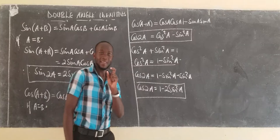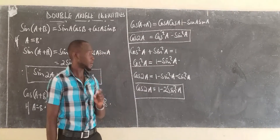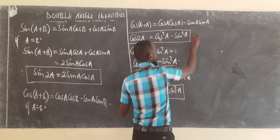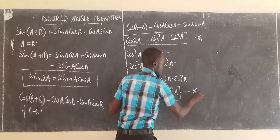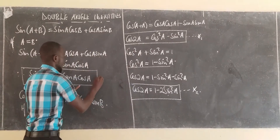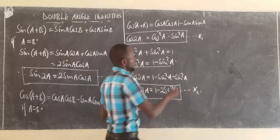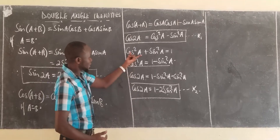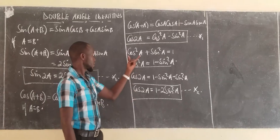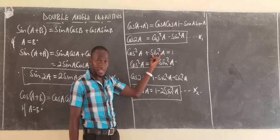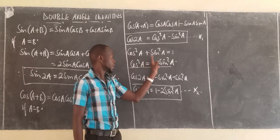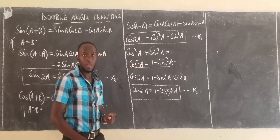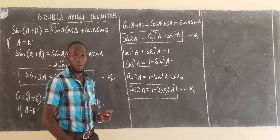Cos of 2A is a special trigonometric expression because it has more than two forms for double angle. This was the first one; this has been the second one. We are yet to see the third one. Go back to the Pythagorean identity: cos squared of any angle plus sin squared of the same angle is always 1. Now make sin squared A the subject, then substitute it where sin squared appears in the expression for cos of 2A.